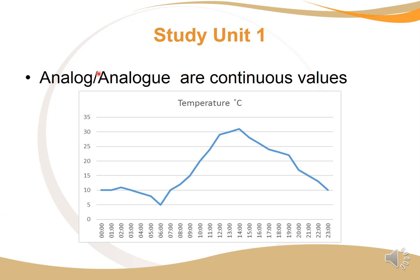We start with analog. Analog and analogue are both exactly the same thing, just spelled differently. You can use whichever one you like. Analog values are continuous values and this is depicted in this graph. Here we have temperature values and you can see it is a continuous smooth flowing graph. We have all the values taken throughout the day. I can stress that it's continuous smooth values.